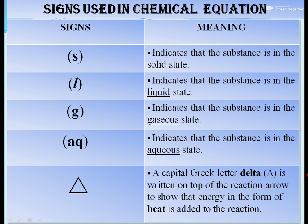Physical states of elements and compounds are also represented in an equation. S in brackets indicates the solid state. Similarly, L, G, and AQ indicate liquid, gaseous, and aqueous states respectively. Sometimes a capital Greek letter delta is written on top of the reaction arrow to show that energy in the form of heat is added. If light energy is added, we simply write 'light' on top of the arrow.